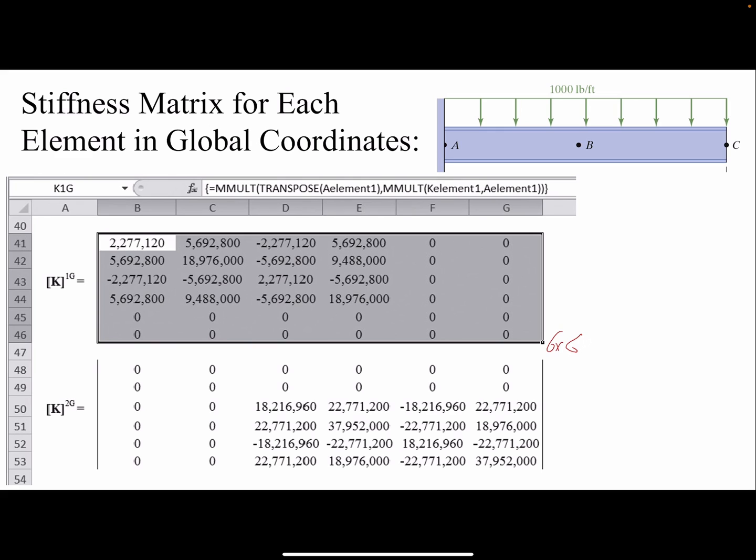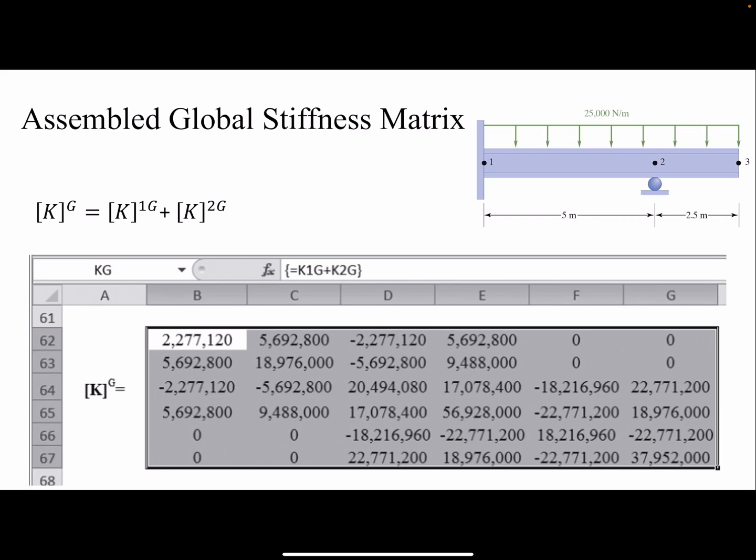Here, if we add them together, then we have our global stiffness matrix or assembled stiffness matrix, which is a simple addition of the two matrices.